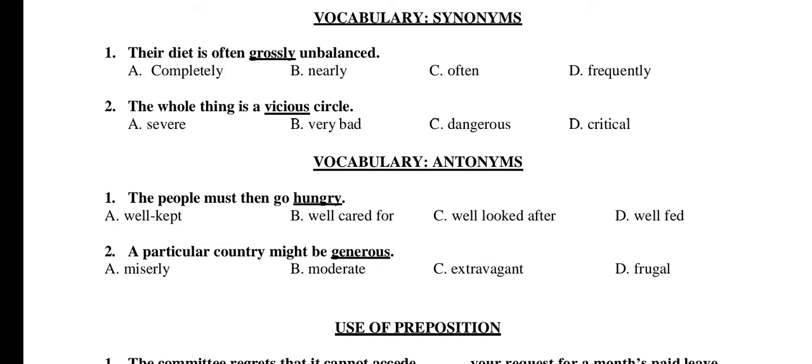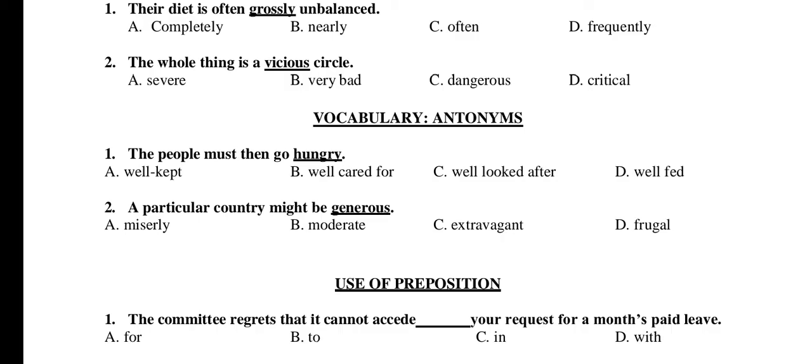Vocabulary — Antonyms. Question 1: Most people then go hungry. A) well kept, B) well cared for, C) well looked after, D) well fed. The right answer is D: well fed. Question 2: A particular country might be generous. A) miserly, B) moderate, C) extravagant, D) frugal. The right answer is D: frugal.